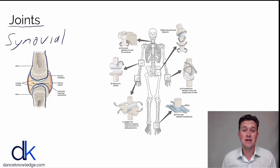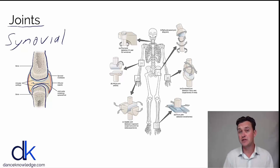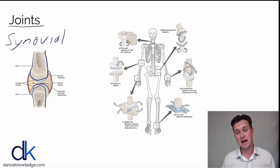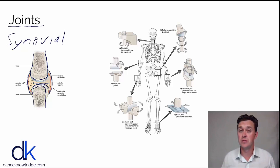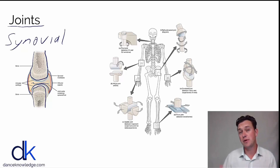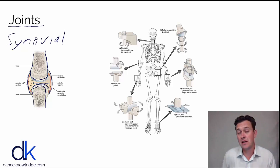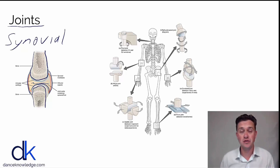They're two articulated bones and they allow the body to move. When a muscle contracts, they allow that movement to occur. Let's have a look at some examples of joints within the body and consider their shape, how they facilitate movement, and the muscles that connect to the bones.